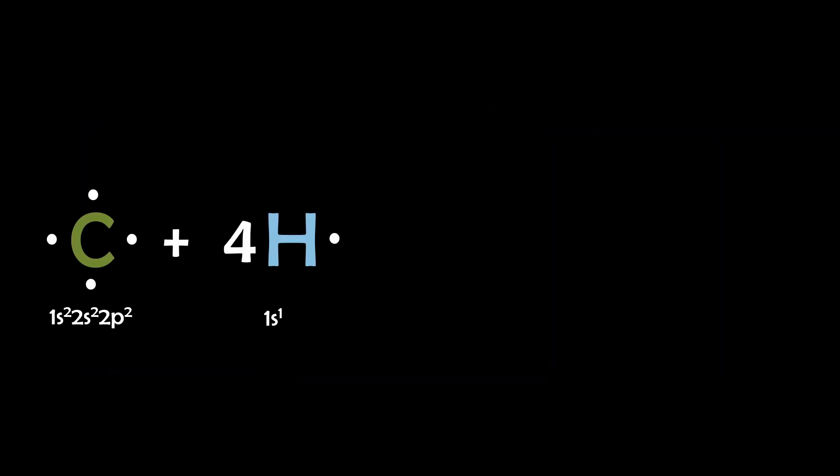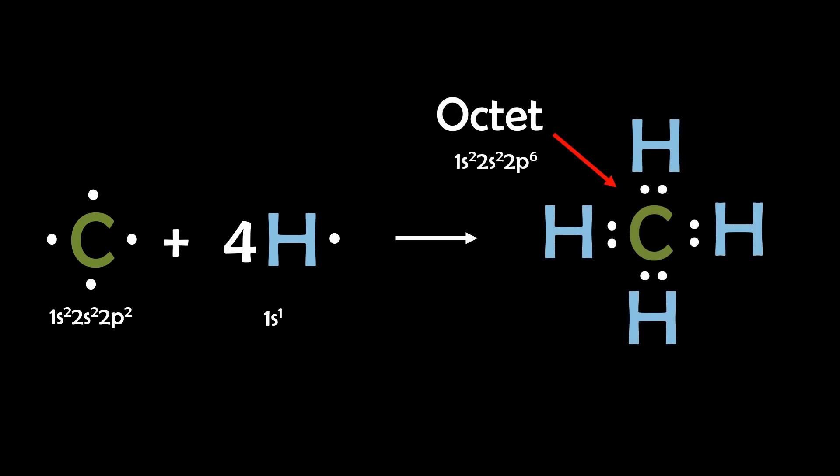So going back to our Lewis structures, the carbon atom with 4 valence electrons forms 4 covalent single bonds with hydrogen to achieve an octet of electrons in its valence shell.